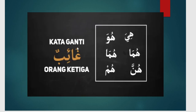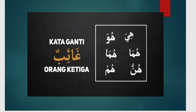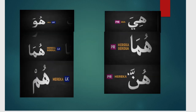Kata ganti orang ketiga atau gaib ada enam, yaitu: hua, huma, hum, hiya, huma, hunna. Hua-huma-hum untuk mudhakar, sementara hiya-huma-hunna untuk mu'annas. Hua mufrad, huma musanna, hum jama. Begitu juga hiya mufrad, huma musanna, lalu hunna jama. Hua: dia laki-laki; huma: mereka berdua laki-laki; hum: mereka laki-laki; hiya: dia perempuan; huma: mereka berdua perempuan; hunna: mereka perempuan.